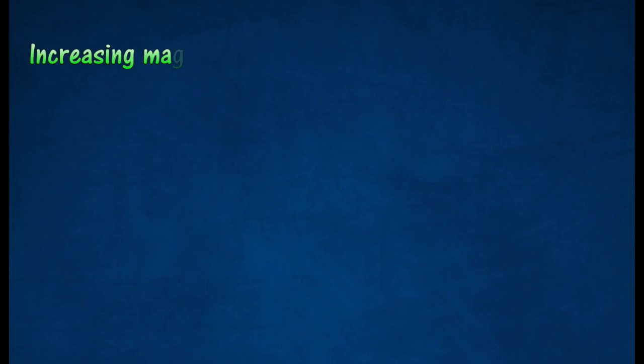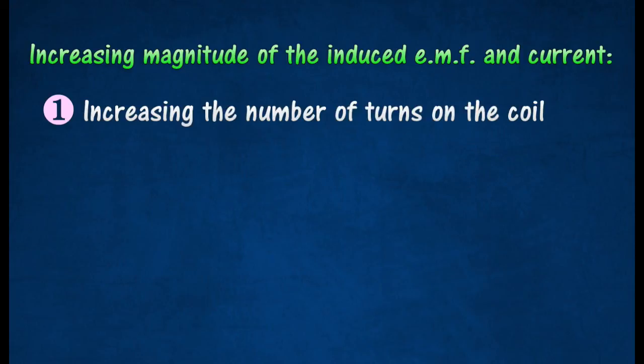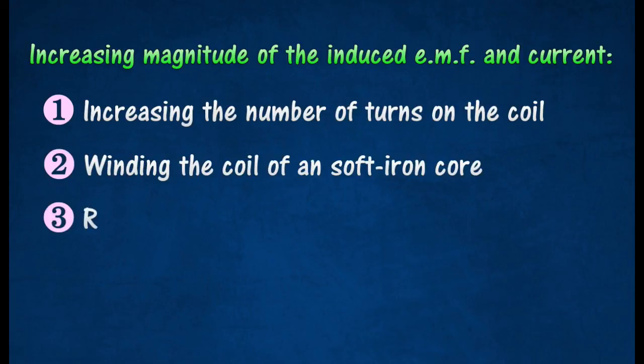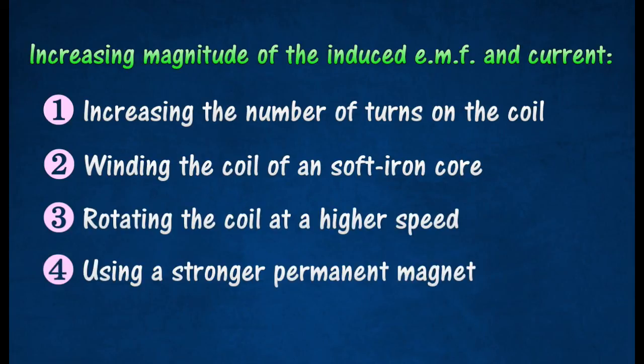The magnitude of the induced electromotive force and current produced by direct current generator can be increased by increasing the number of turns on the coil, winding the coil on a soft iron core, rotating the coil at a higher speed, and using a stronger permanent magnet.